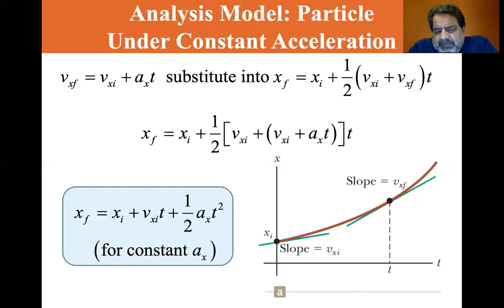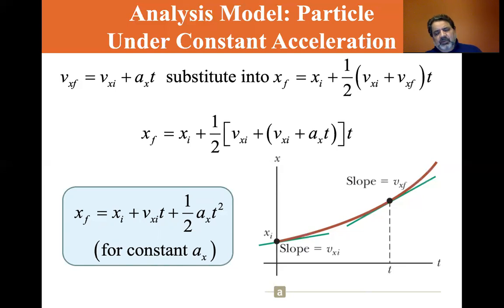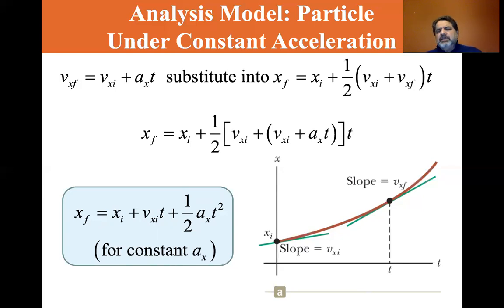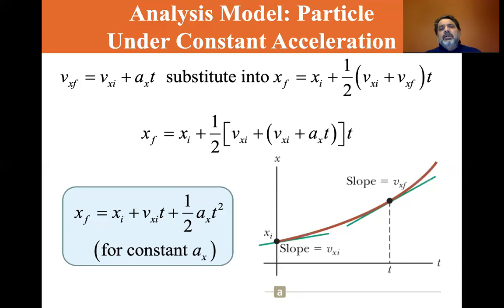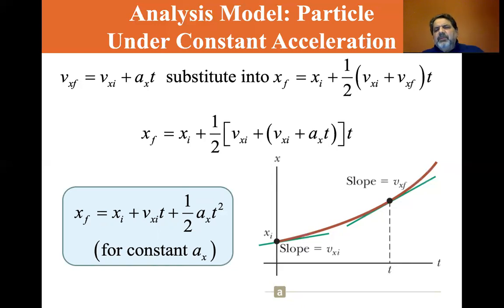Don't be intimidated by t-squared. Let's say you have a gravitational acceleration of 10 meters per second per second. That means every second you increase by 10 meters per second. So the first second you're going 10 m/s, the second second 20 m/s, the third second 30 m/s. It's easier to understand if you say meters per second every second, rather than meters per second squared. So don't be intimidated — seconds squared just means per second, per second.